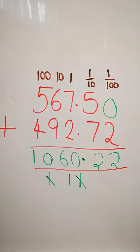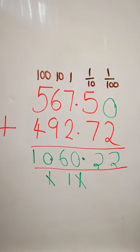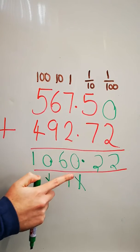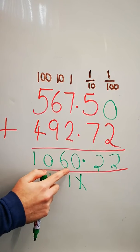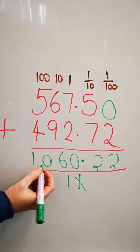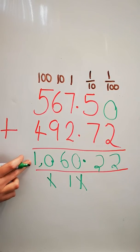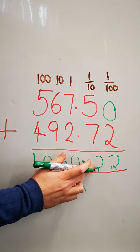As I said previously, if you start at the decimal point, and you count three place value places to the left, one, two, three, you can then add your comma to help you easily say one thousand sixty point two two.